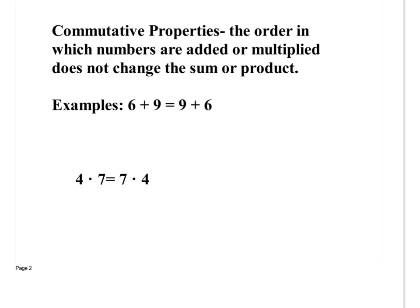Four times seven and seven times four give the same answer — it doesn't matter how it's ordered. That's commutative property: change order. Does commutative property work for subtraction? No. Can you change the order of a division problem and get the same answer? No. This only works for multiplication and addition.